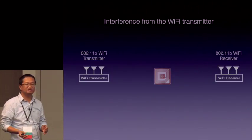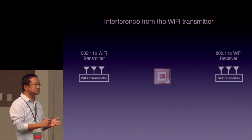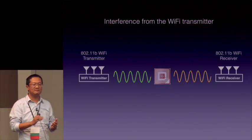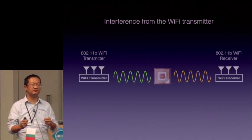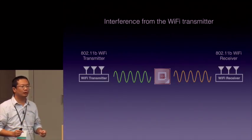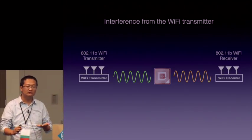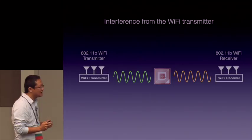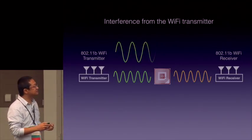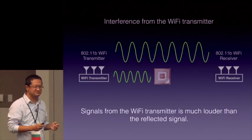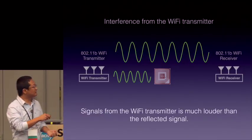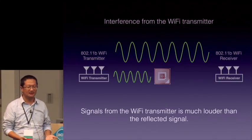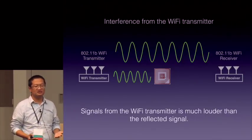Having discussed how the tag performs codeword translation, let's go through the process again. When the Wi-Fi transmits a signal, the tag reflects it to the Wi-Fi receiver by performing or not performing codeword translation to encode its information. The Wi-Fi receiver receives the backscatter signal, which is still a valid Wi-Fi signal, and based on the codeword it observes, it decodes the tag data. However, at the same time, the Wi-Fi receiver also receives the signal from the Wi-Fi transmitter, which is much louder than the backscatter signal — more than 30 dB higher. As a result, the Wi-Fi receiver cannot hear the backscatter signal at all.